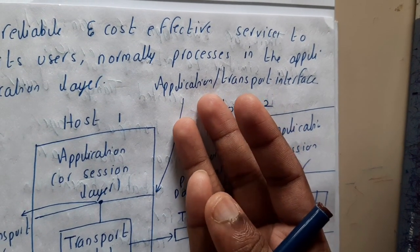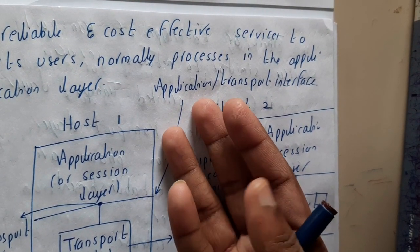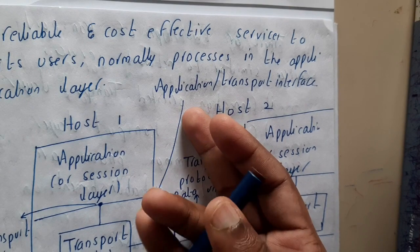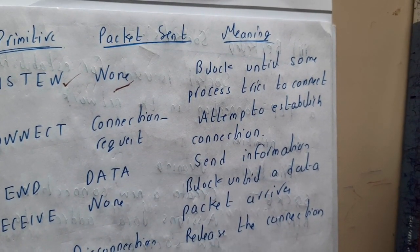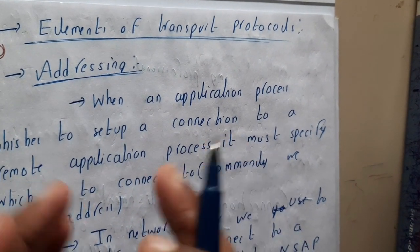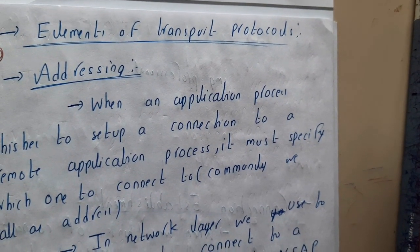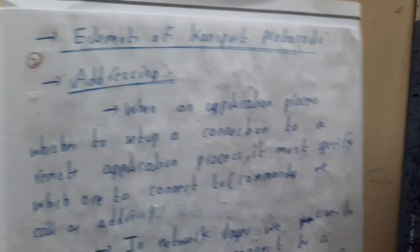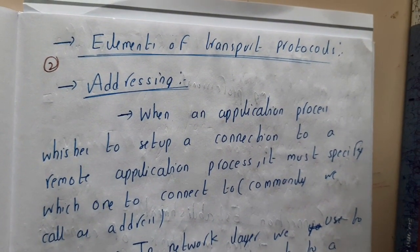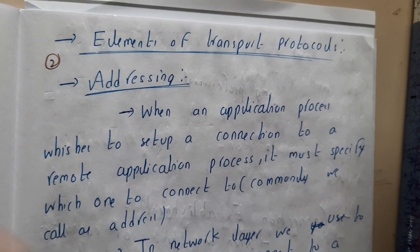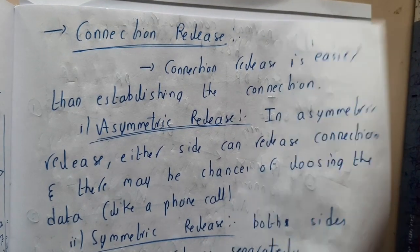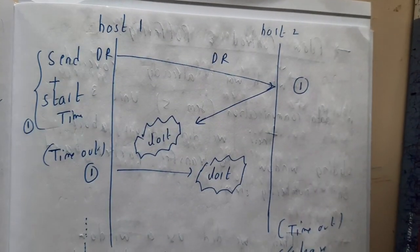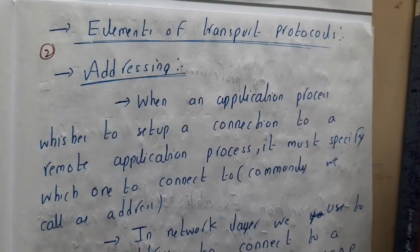So in this lecture we discussed what the transport layer is and its main objectives. We covered the three main features and how the transport layer is helpful for the upper layers. We also discussed transport layer primitives and got an introduction to sockets. In the next lecture we will go through the main elements of the transport layer, including establishing connections and related concepts. Thank you for watching!